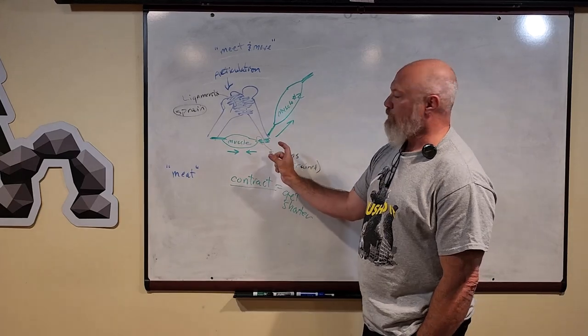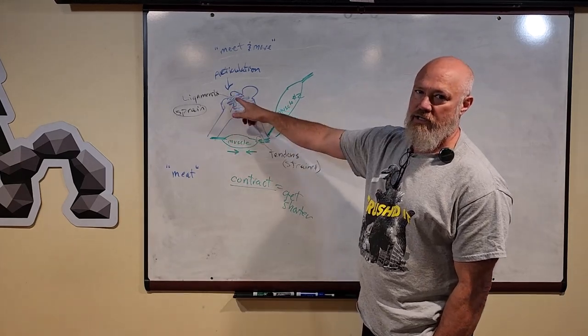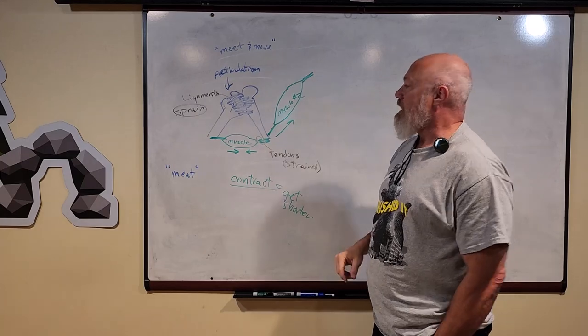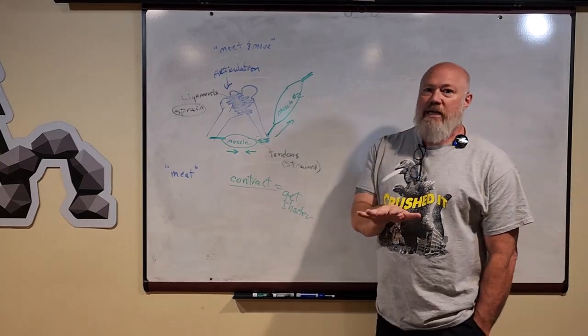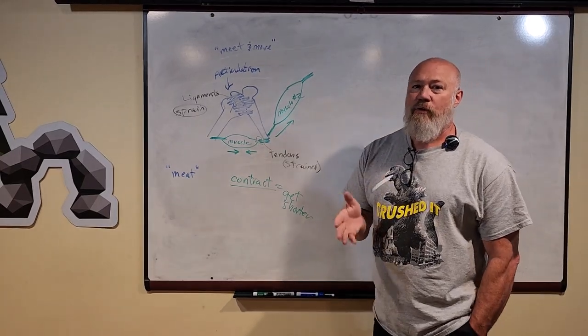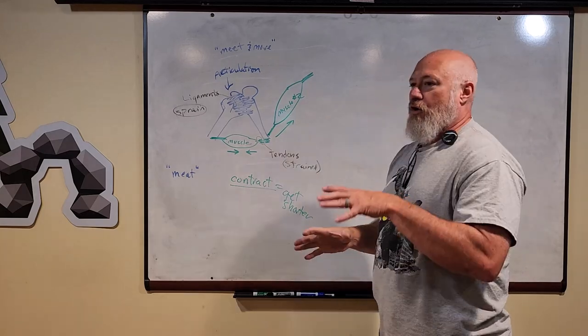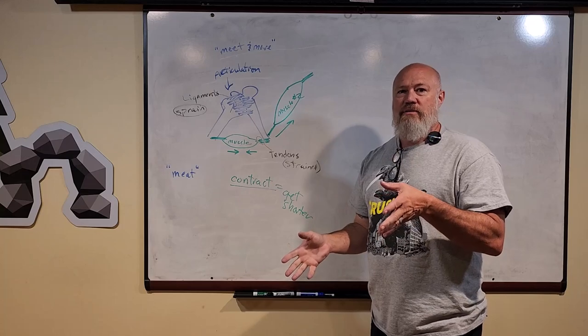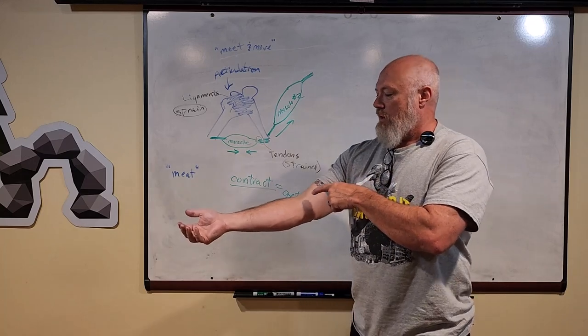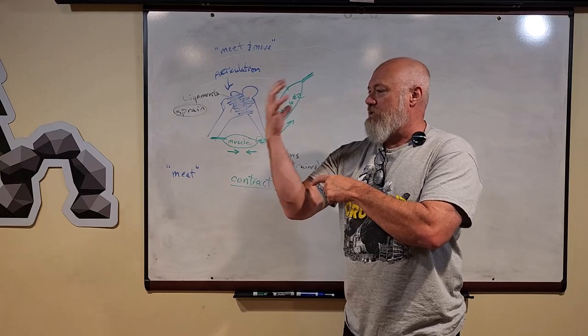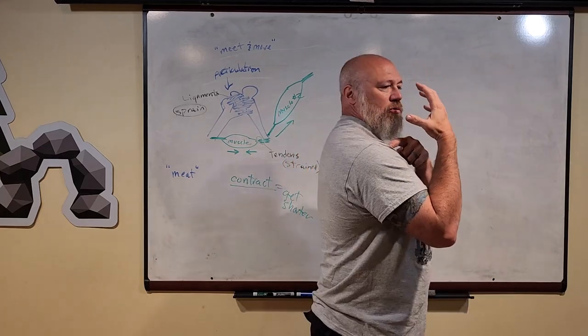So all those little movements you make work because your muscles get shorter and pull two bones together around an articulation where they meet and move. Now it gets pretty complicated because you have 634 muscles moving stuff around and they have to be coordinated. They have to work at the same time.